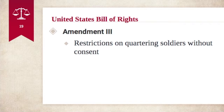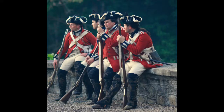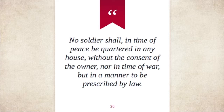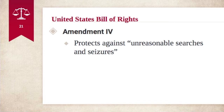Moving on to the Third Amendment. This might sound a little funny because it isn't something we usually think about in modern times. The Third Amendment places restrictions on quartering soldiers without consent. To understand this, we have to think about the historical context. Before and during the American Revolutionary War, the British government had required Americans to provide British soldiers with food and housing. After the American colonists won the Revolutionary War against Great Britain, they wanted to make sure they could never be required to house and feed soldiers again. Thus the Third Amendment was added. The text reads: "No soldier shall, in time of peace, be quartered in any house without the consent of the owner, nor in time of war, but in a manner to be prescribed by law."